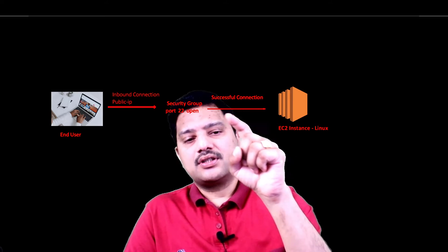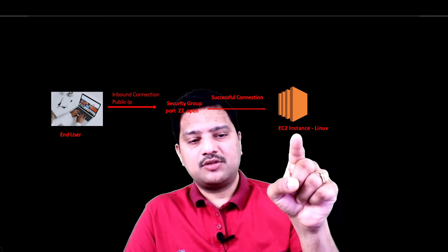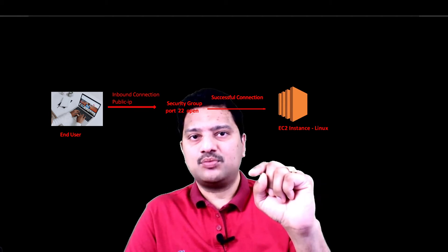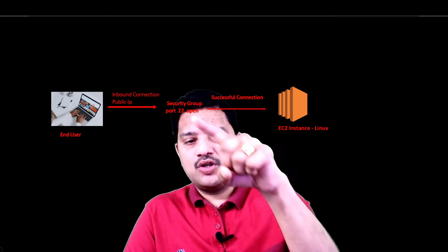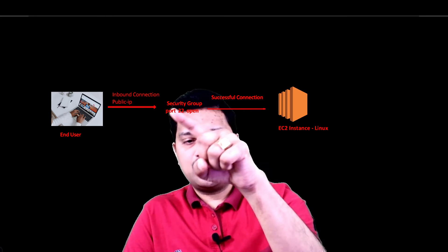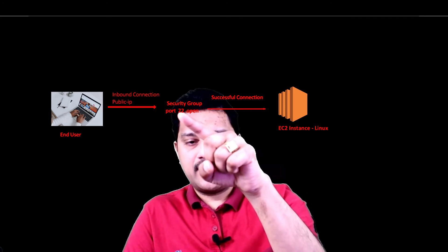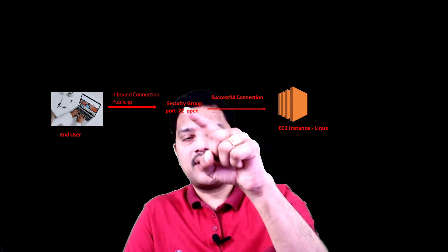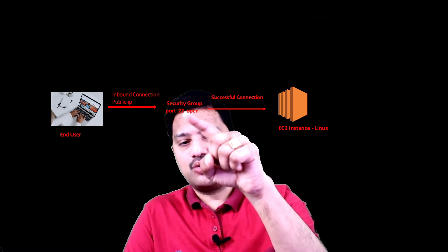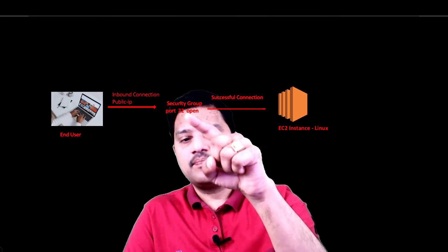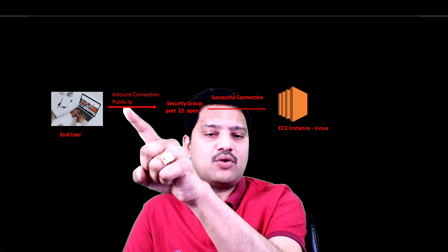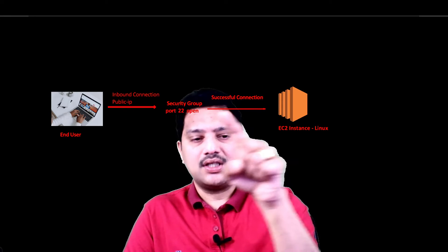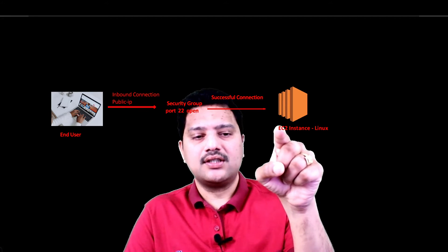For talking to the Linux machine, we need to have SSH port 22 open. We have a security group defined in AWS, and this security group has port 22 open. Then only any inbound connection that comes to the EC2 instance is allowed.